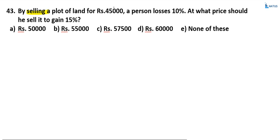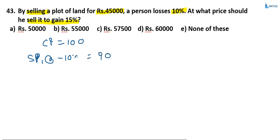By selling a plot of land for 45,000, a person loses 10%. At what price should it be sold so as to gain 15%? Suppose the person sells that land at 45,000 and gets 10% loss. Let cost price equal 100. SP1 at 10% loss equals 90. SP2 at 15% gain equals 115. This 90 represents 45,000 because the selling price of that land equals 45,000 giving a loss. That person requires a gain.